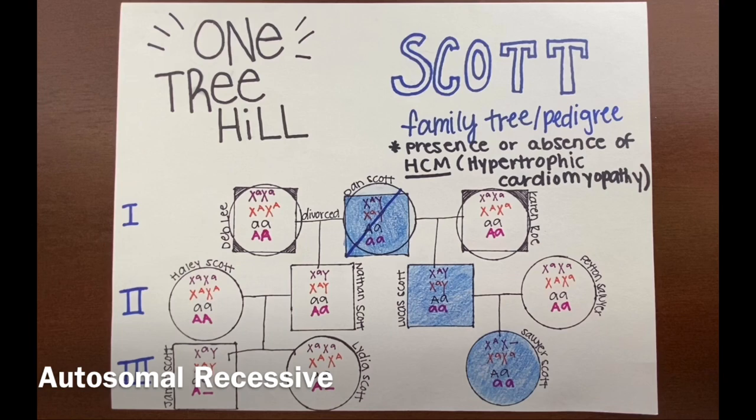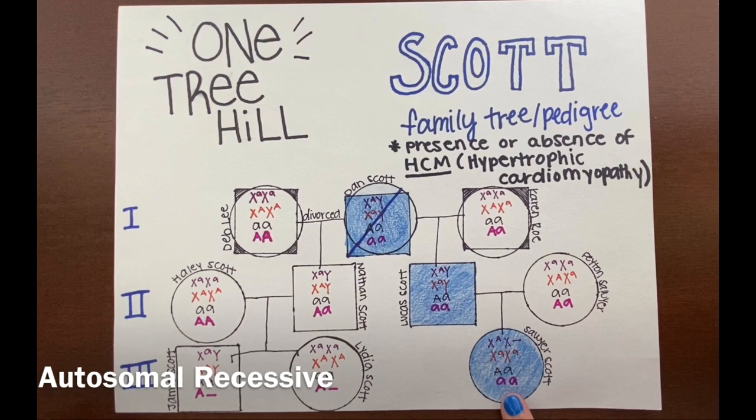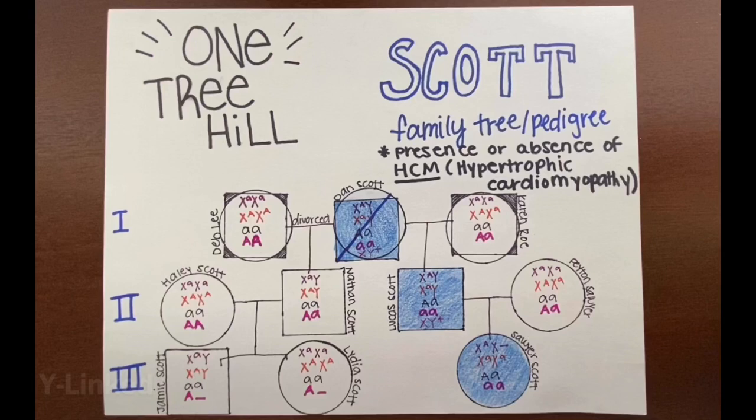Next, I tested autosomal recessive, filling in everyone that had the phenotype as little a, little a, and everyone else as at least one big A. I knew that Peyton had to have a little a because she gave it to Sawyer. And I knew that Karen had to have a little a because she gave it to Lucas. Lastly, I tested Y-linked inheritance, but knew that a female cannot have a Y-linked trait, and that this was not a mode of inheritance for this pedigree.